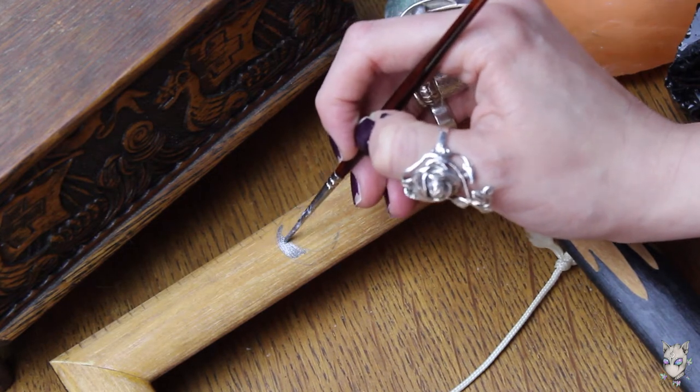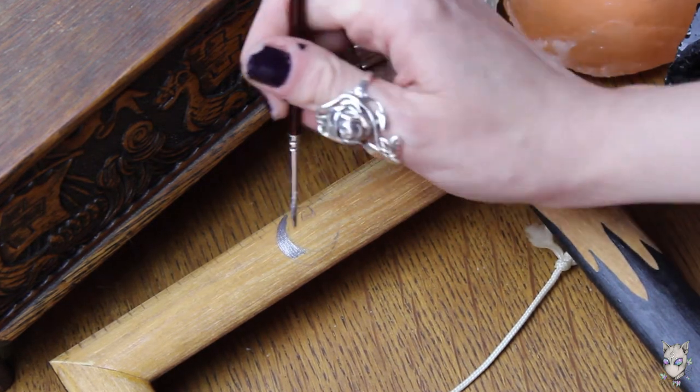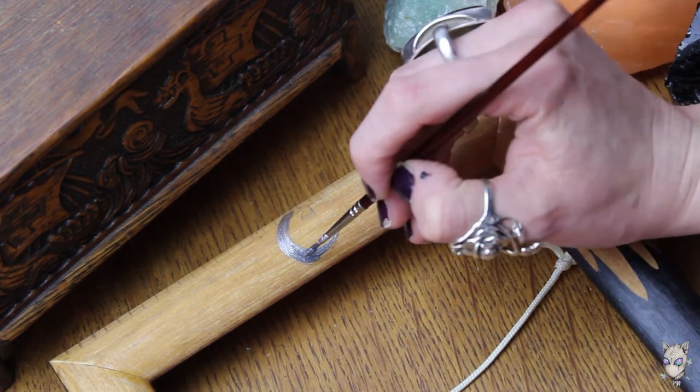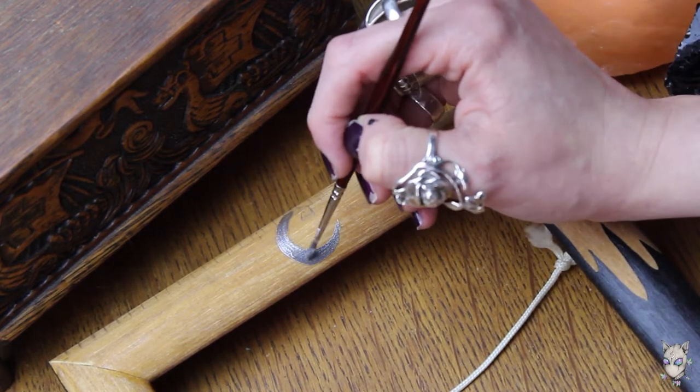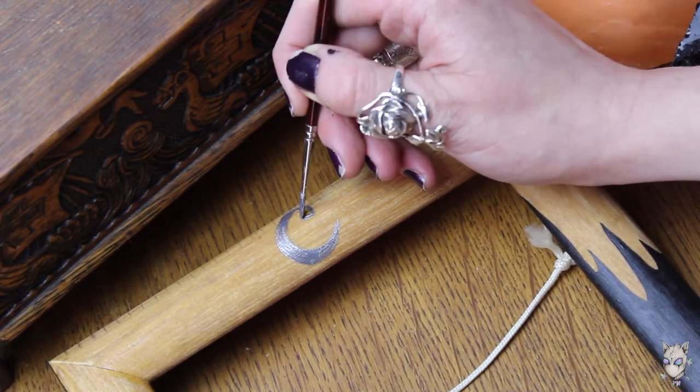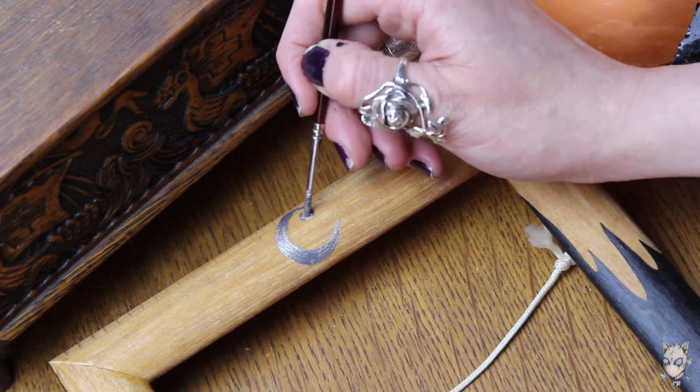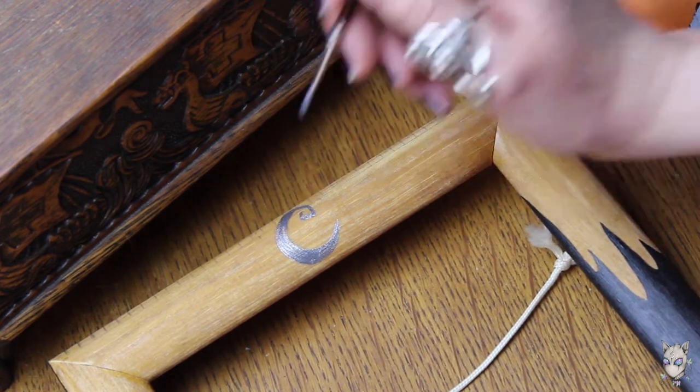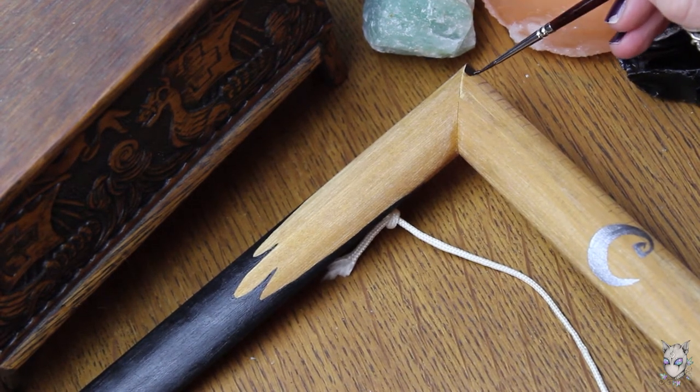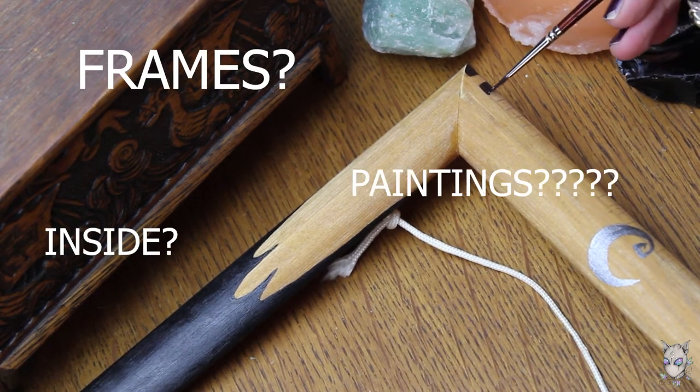Here you see me painting a little moon. I tried to keep it relatively simple design just so that it didn't overshadow that it was for a painting, but I just wanted it to look a little bit different because you see painting inside frames but you don't see frames inside paintings.